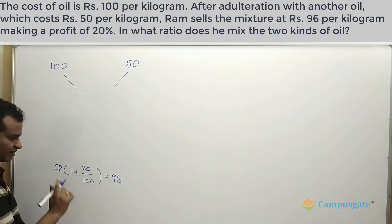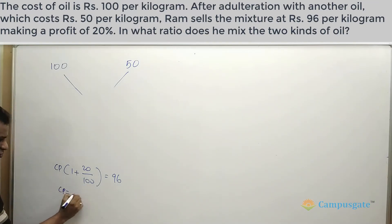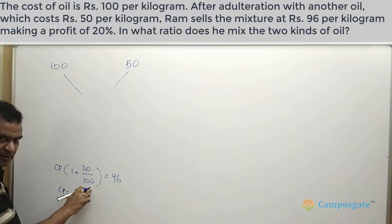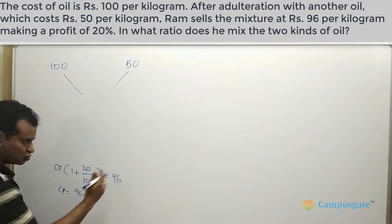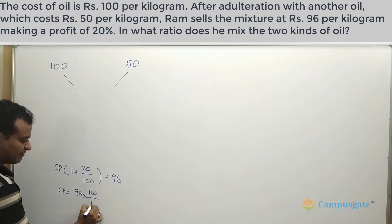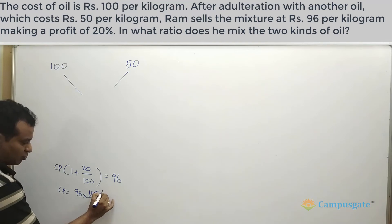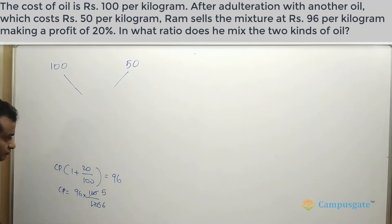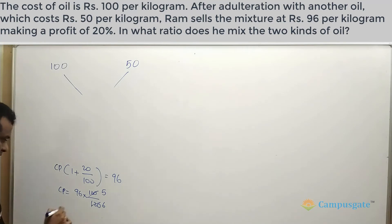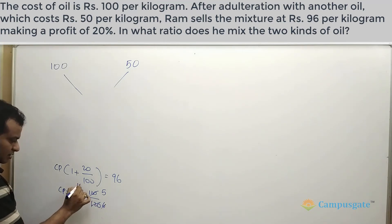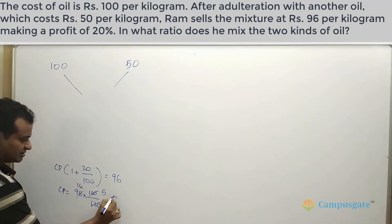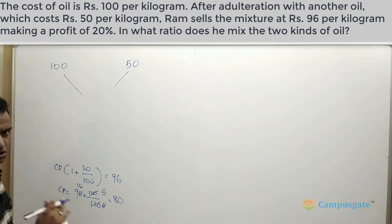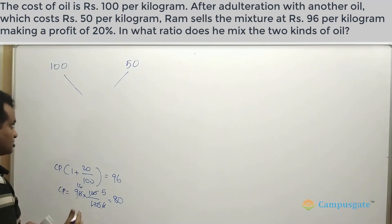So CP equals 96 multiplied by 100 by 120. Simplifying: 20 goes five times into 100 and 20 goes six times into 120, giving us 80. So 80 rupees is the cost price of the mixture.